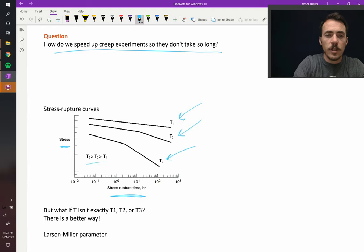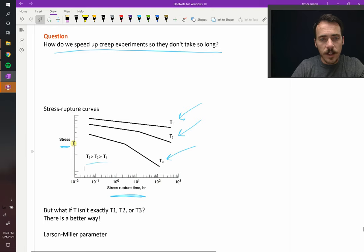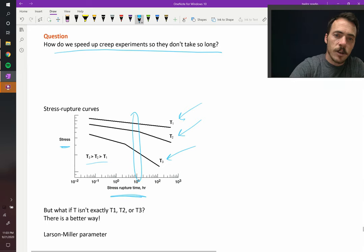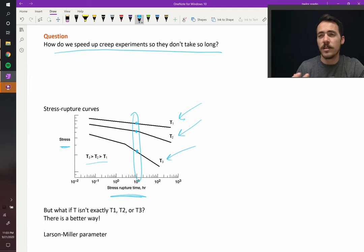Assuming that T3 is larger than T2, which is larger than T1, the stress, if you want it to last a certain amount of time, like 10 hours, look at this: at T3, you can only have it loaded up to a low stress if you want it to last 10 hours. T2 can withstand a higher stress, and T1 can withstand the highest stress.